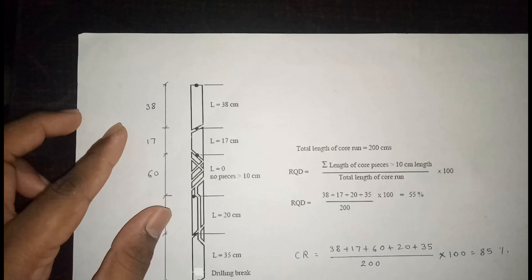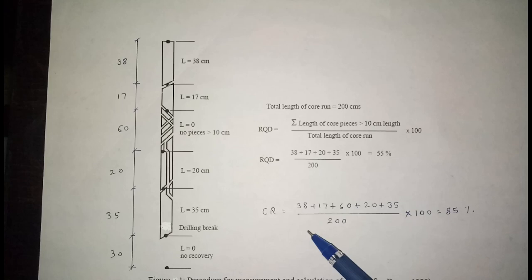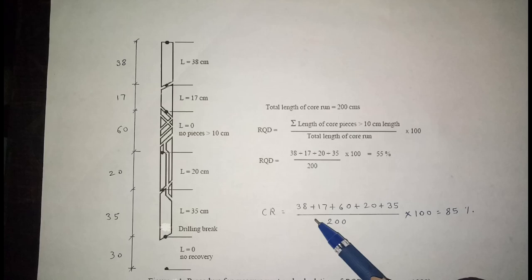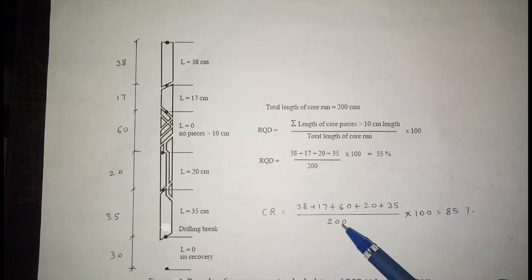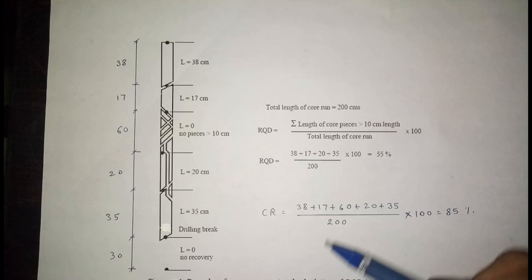Now we will see core recovery. Core recovery is the amount of material recovered during rock coring. Core recovery is equal to the total length of rock recovered, divided by the total length of the core run, multiplied by 100.